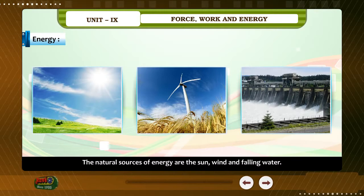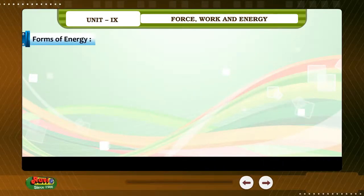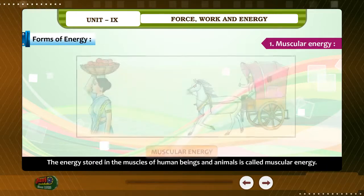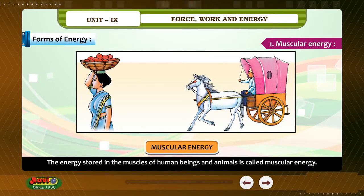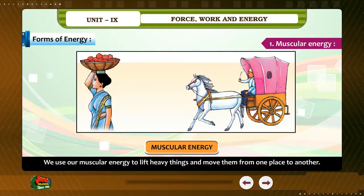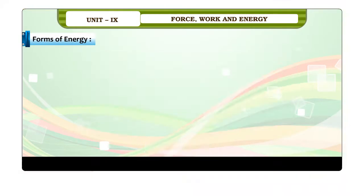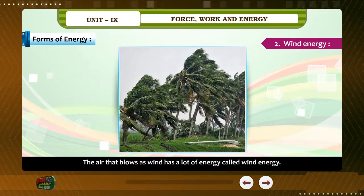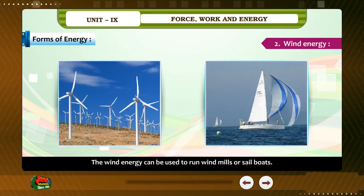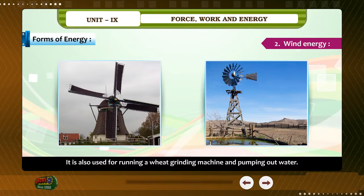The natural sources of energy are the sun, wind and falling water. Forms of Energy: 1. Muscular Energy — the energy stored in the muscles of human beings and animals is called muscular energy. We use our muscular energy to lift heavy things and to move them from one place to another. 2. Wind Energy — the air that blows as wind has a lot of energy called wind energy. Wind energy can be used to run windmills or sailboats, and for running a grain-grinding machine and pumping out water.